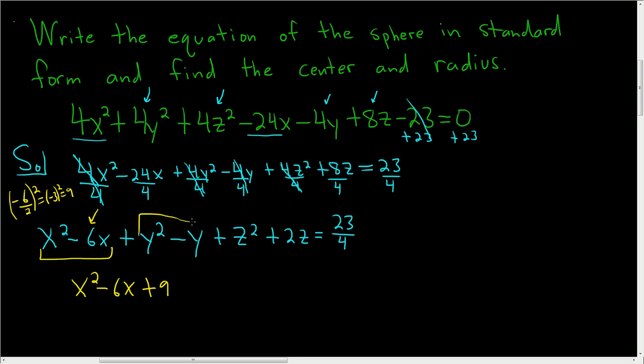Now we'll look at the y terms. So plus y squared minus y. And the coefficient of y is negative 1. So we take that and divide it by 2 and square it. So we get 1 over 4. So plus 1 over 4.